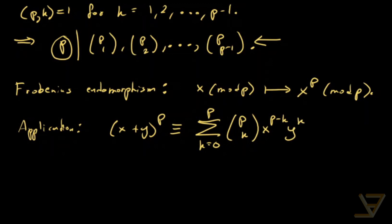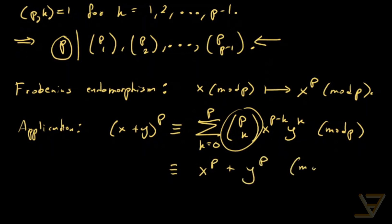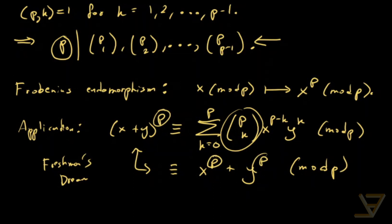What happens is that everything except the first and last terms disappear, because they're all divisible by p and we're doing mod p. So we just get that this is equivalent to x to the p plus y to the p mod p. This is a case where something called the freshman's dream is true — essentially the idea that powers distribute over the constituent pieces. This is not true in general, but modulo a prime with exponent p, it does work.